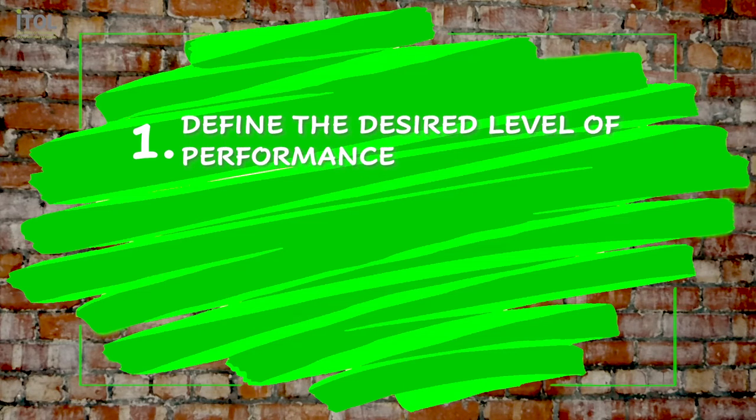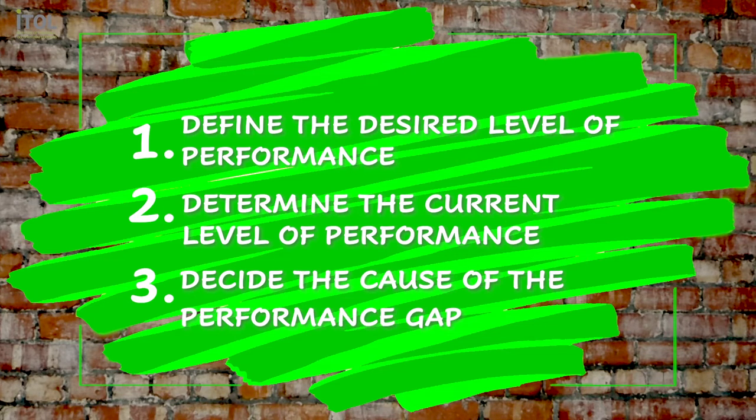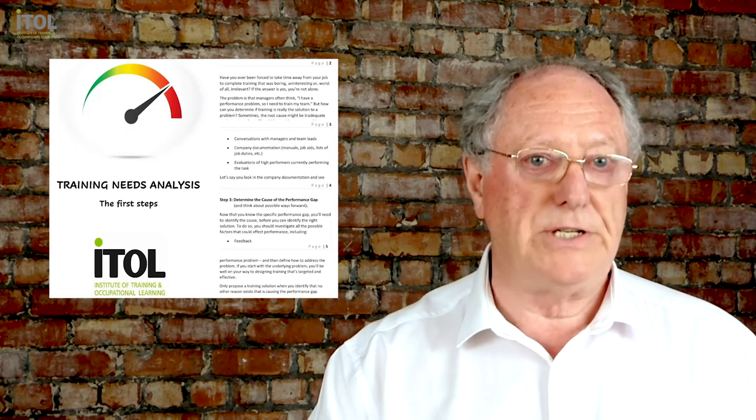What I'm suggesting is a very simple three-step process. First, define the desired level of performance - start with your EWS. Second, determine the current level of performance - analyze where the person is against that standard. Third, decide the cause of the performance gap - decide the reason for the gap between the two. If you follow that process, you'll find that you'll be training the right people, the right stuff, at the right time, in the right place. We have a support document that goes with this, so please download it underneath where you make your comment. Please leave your comments and tell me your take on all of this, and we'll together help each other to be the best we can be. Thank you so much, and I look forward to seeing you next time.